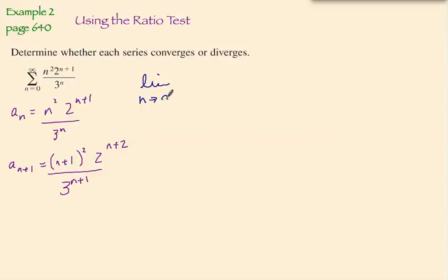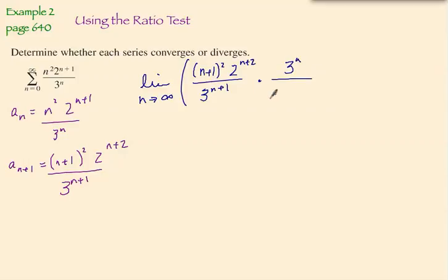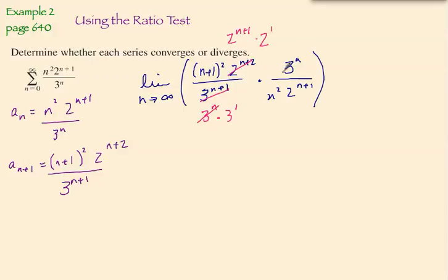We're going to have the limit as n approaches infinity of n plus 1 quantity squared times 2 to the n plus 2, over 3 to the n plus 1, times the reciprocal of our original n-th term, which is 3 to the n over n squared times 2 to the n plus 1. We can rewrite 3 to the n plus 1 as 3 to the n times 3 to the 1, and 2 to the n plus 2 as 2 to the n plus 1 times 2 to the 1. With those modifications, the 3 to the n's cancel and the 2 to the n plus 1's cancel, leaving us with the limit as n approaches infinity of 2 thirds times n plus 1 quantity squared over n squared.